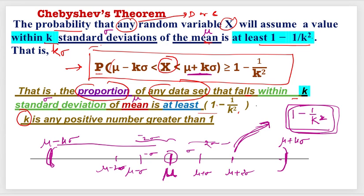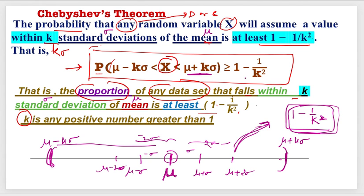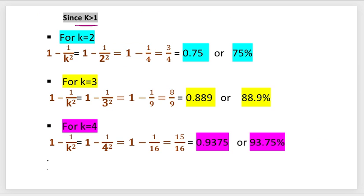Let us find this expression for certain values of k. Since k must be greater than 1 — because if k equals 1, the result becomes 0, giving no information, and if k is less than 1, it becomes negative and probability cannot be negative — we must maintain k greater than 1 for the theorem to be applicable.